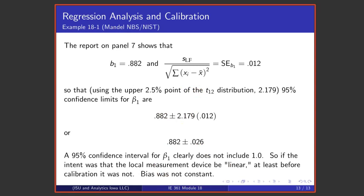If one looks at the report on panel 7, the slope of the least squares line is 0.882 and the standard error for the slope of the least squares line is 0.012 so that confidence limits for the slope of the relationship between x and average y are these. Those limits, those are 95% confidence limits, those limits do not include one. And so one knows pretty definitively that this is not, that Mandel's data did not come from a device that one would call linear in the sense of having constant bias.